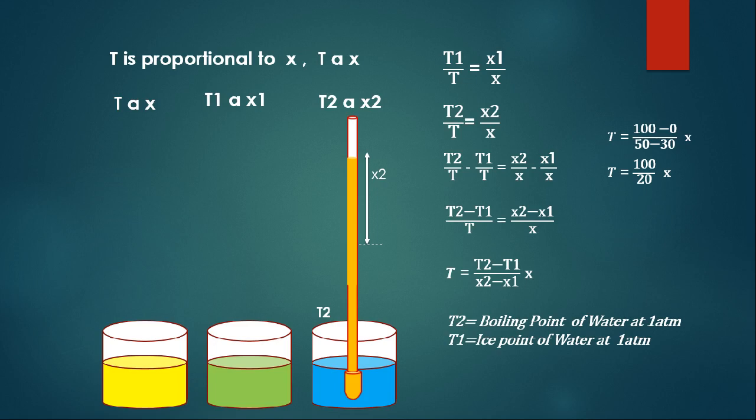With those values, the coefficient becomes 100 divided by 20, that is 5 per unit of X. This means if I measure a thermal expansion X for some unknown liquid — say X equals 10 — then the temperature is 5 times 10, which is 50 degrees Celsius. This is how we can measure temperature.